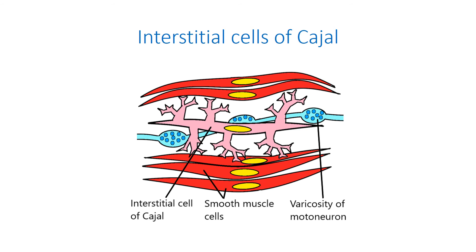Slow waves cause phasic contractions of smooth muscle cells. It was shown that varicose neuroterminals of enteric nervous system motor neurons lie close not only to smooth muscle cells, but also to interstitial cells of Cajal. Thus, the enteric nervous system innervates both interstitial cells of Cajal and smooth muscle cells, and interstitial cells of Cajal may be conduits for muscular innervation besides direct innervation from enteric motor neurons to smooth muscle cells.